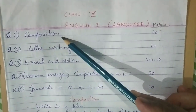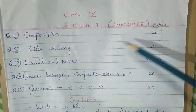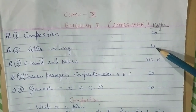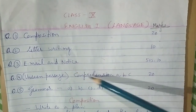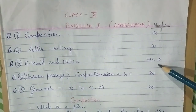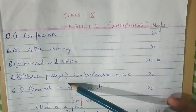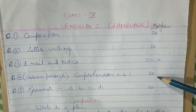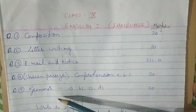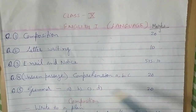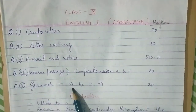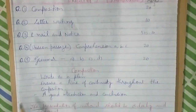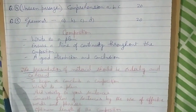Question number 1 is composition, 20 marks. Letter writing, 10 marks. Email and notice, 10 marks. Unseen passage or comprehension, 20 marks. And the grammar portion, which also has 4 parts — A, B, C, D — and is also 20 marks.